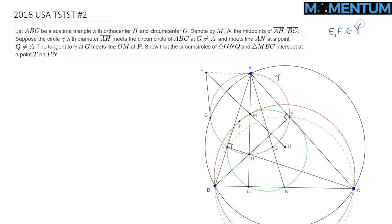E and F are on circle gamma, whose diameter is AH. Now, circle gamma intersects the circumcircle of ABC at G — you can clearly see it marked here. We're further told that the tangent to gamma at G meets the line OM at P.